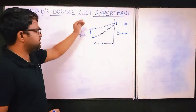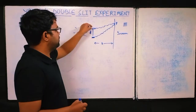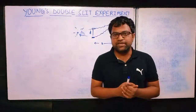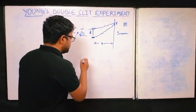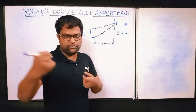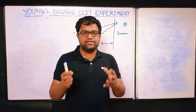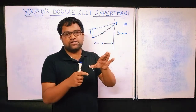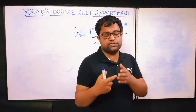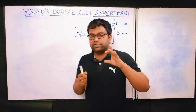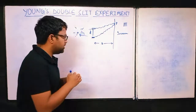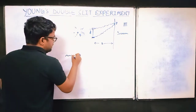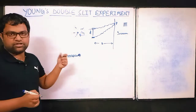From this experiment, Young concluded that light is behaving like a wave. Now, why can't we see this wave nature in our day-to-day experience? The wavelength of visible light is very small — the spectrum from violet to red spans about 350 nm to 750 nm, which is on the order of 10⁻⁹ meters. When the obstacle is very large compared to the wavelength, light simply reflects, consistent with ray optics.